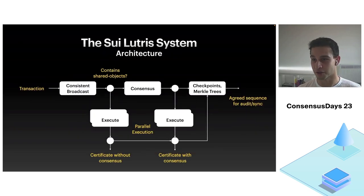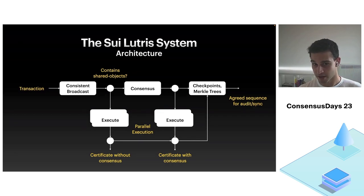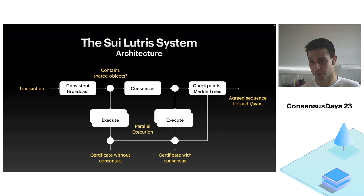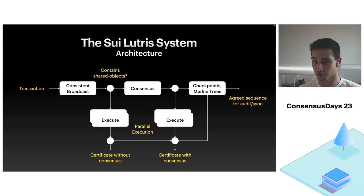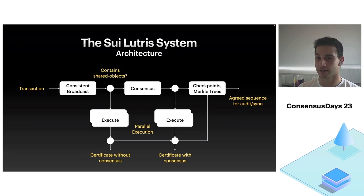Here's the big picture of how it works. The transaction comes in as usual and goes through a round of Byzantine consistent broadcasts. For most transactions, we immediately execute it and return to the client a certificate saying your transaction is executed, final, all done. For other transactions with different properties, we require consensus — traditional Byzantine consensus using Narwhal and Bullshark in our case, though anything else can be used.